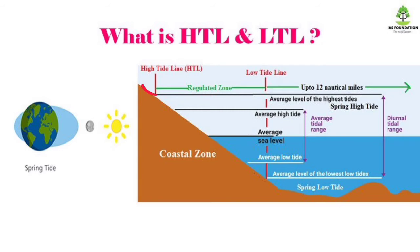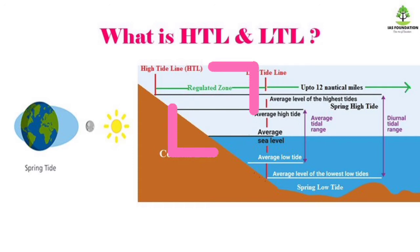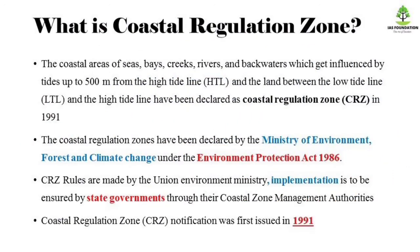If you see the High Tide Line, you can see the land within 500 meters. If you tell that area as the Coastal Regulation Zone, you can see the land area of the Coastal Regulation Zone — that is the Coastal Regulation Zone.